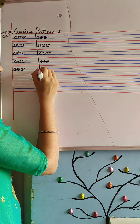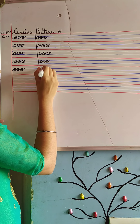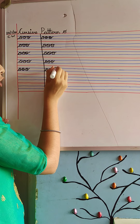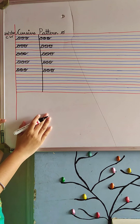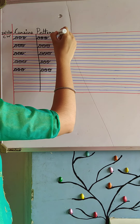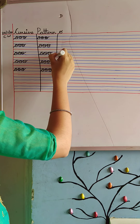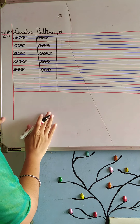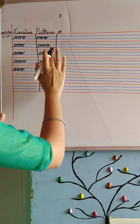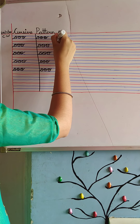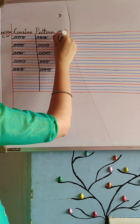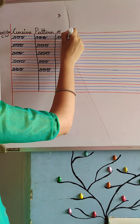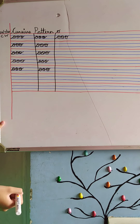Okay? Again, O. O for oval. Okay? Again, we will draw a line, and we will write again. Again we will write O. O for oval.